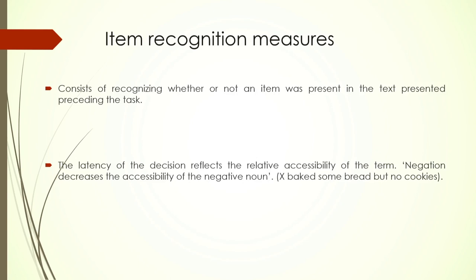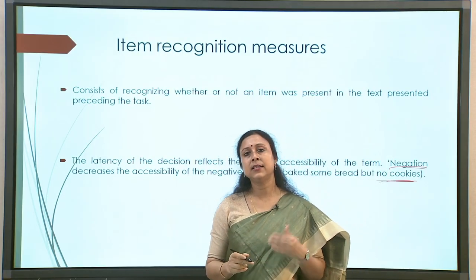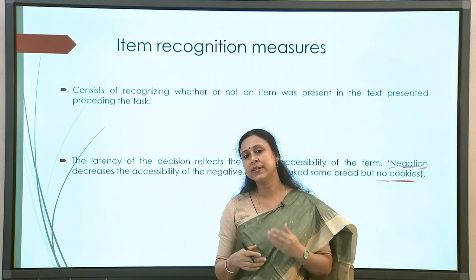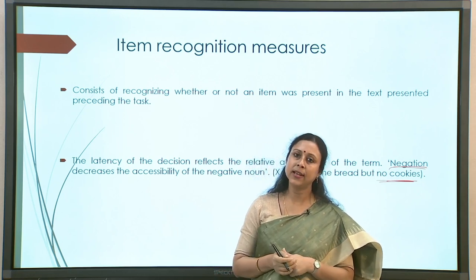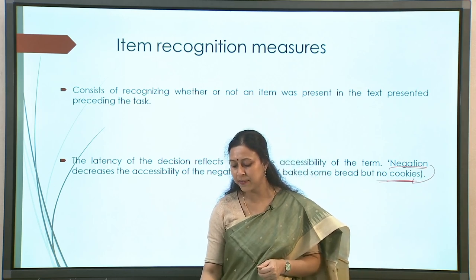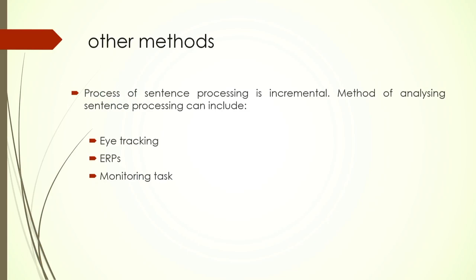Another method is item recognition, used extensively to understand the effect of negation in sentence context. The latency of the decision reflects relative accessibility of the term. For example, after reading 'X baked some bread but no cookies,' if asked whether 'cookies' was present in the sentence, participants take longer or struggle to confirm it — demonstrating the effect of negation on the retrieval process. Other methods include eye tracking, ERPs, and monitoring tasks.